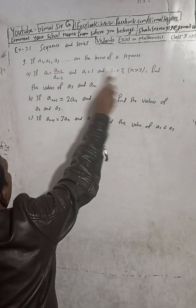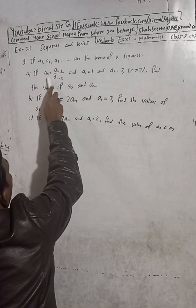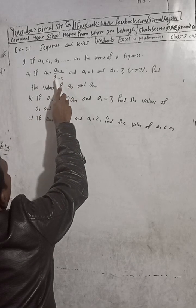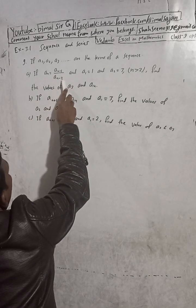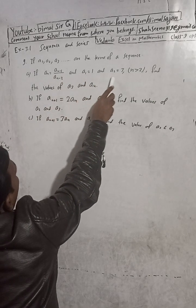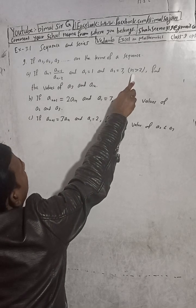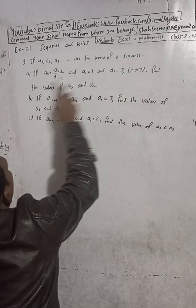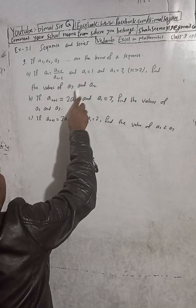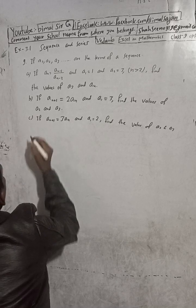Question 9: If a1, a2, a3, ... are the terms of a sequence, and a_n is equal to a_(n-1) divided by a_(n-2), where a1 is equal to 1 and a2 is equal to 3, for n greater than 2 — find the value of a3 and a4.